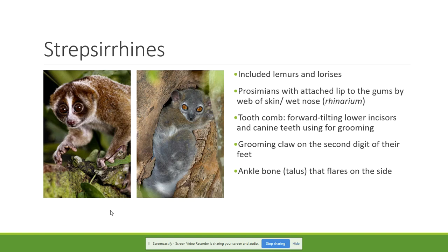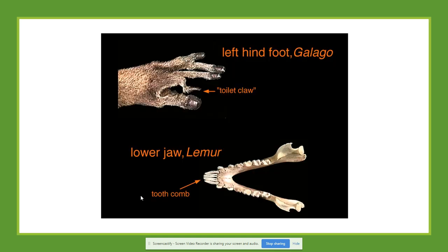They also possess a grooming claw on the second digit of their feet and an elongated ankle bone. Here we have the lower jaw of a lemur. If you look here, we can see the lower teeth, where the canines and incisors are tilted forward — that is the tooth comb. In the hand, we see the grooming claw, the one used for grooming. These features are specific to this kind of primate.